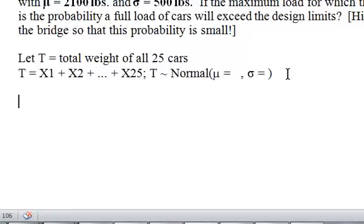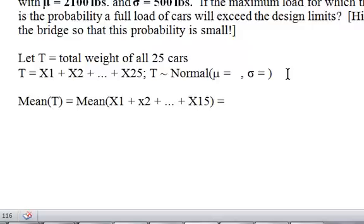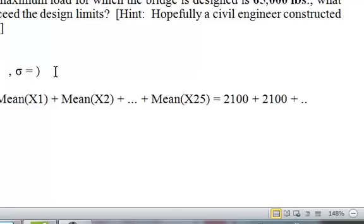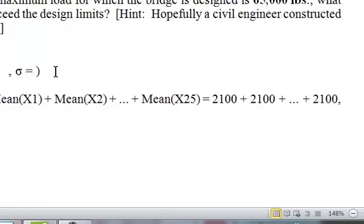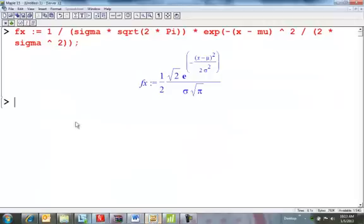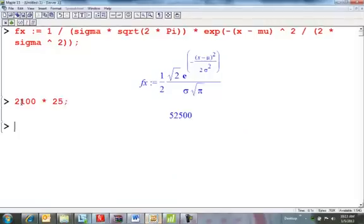When you sum random variables, you're allowed to add their means. Mean of T equals the mean of the sum. The mean of a linear combination is just the sum of the means. I can add all 25 of them, so the mean of one of them 2100 plus 2100 plus 2100. Mean of T is 2100 times 25.